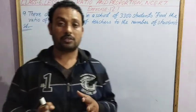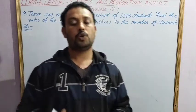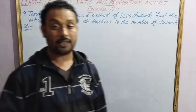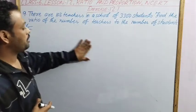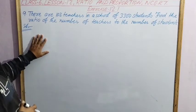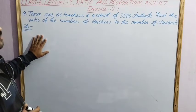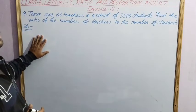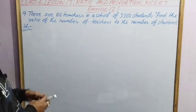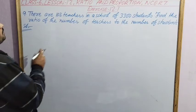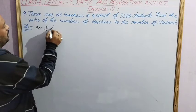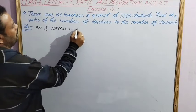Hi, welcome to all. Today we will do Exercise 12.1, Question Number 9. Question number 9 says: there are 102 teachers in a school of 3300 students. Find the ratio of the number of teachers to the number of students. Number of teachers is given as 102.